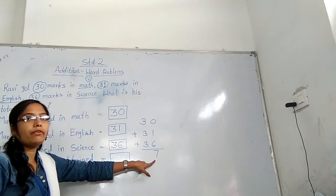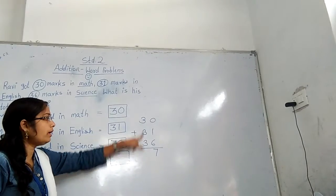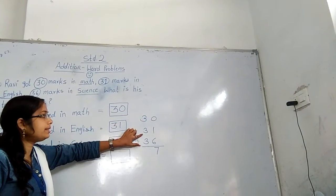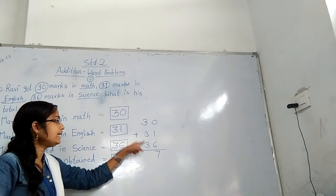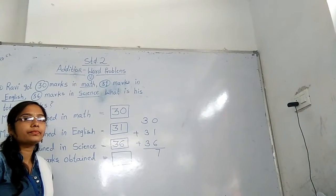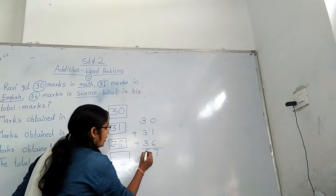We solved the ones place. Now the tens place: 3 plus 3 plus 3 equals 6, and 6 plus 3 equals 9. So write here 9.